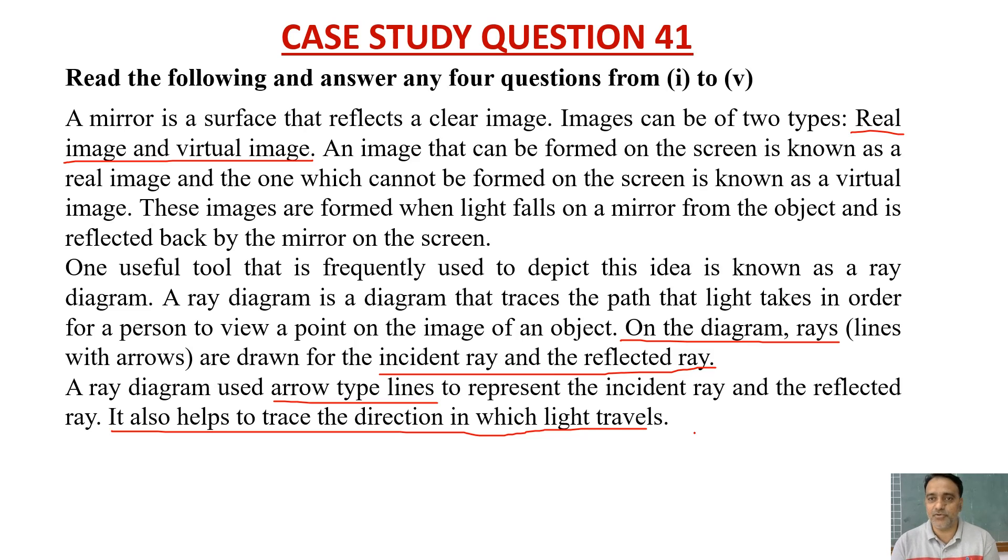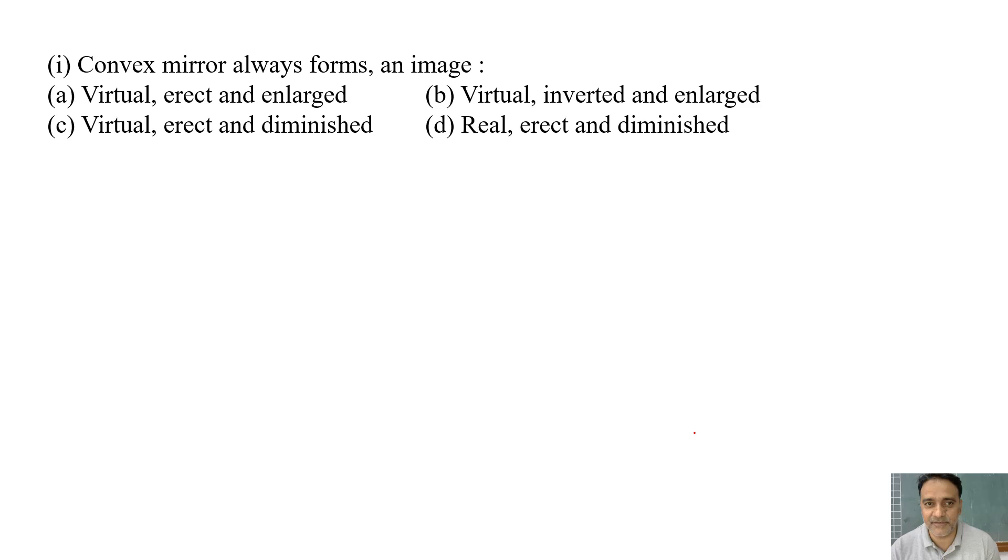Now based on this, some questions have been framed. So let us start with the first question. Convex mirror always forms an image: virtual erect and enlarged, virtual inverted and enlarged, virtual erect and diminished, real erect and diminished. So virtual kabhi inverted nahi hota hai, right? Real kabhi erect nahi hota hai. So the correct option is c: virtual, erect and diminished.